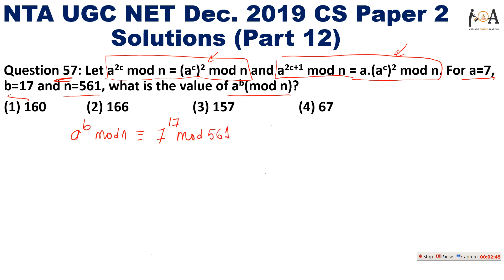So it's nothing but 7^17 mod 561 we need to find. I can factorize it for easier computation: 7 · (7^4)^2 whole squared, since 4 × 2 × 2 = 16 plus 1 equals 17. I can write it as mod 561.